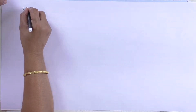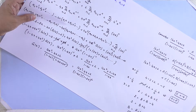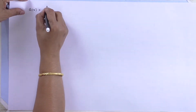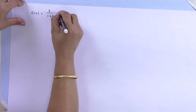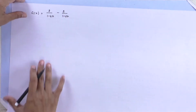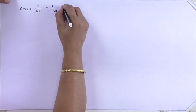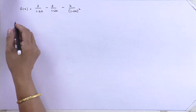Now I have considered my g of x. So my g of x will be equal to — here I have the entire term, and after undergoing the partial fraction I have got: A value is 8, so it is 8 by (1 minus 4x); B value is minus 2, so it will be minus 2 by (1 minus 2x); and C value I have got to be minus 4, so minus 4 by (1 minus 2x) whole square.